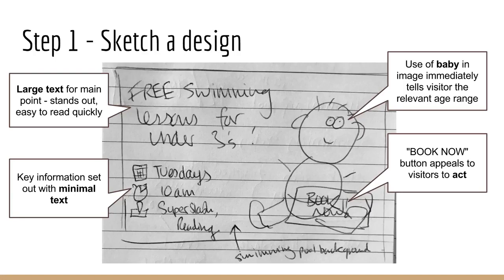Moving to the top right, you'll see we're using a baby or toddler in the image. That immediately tells the visitor the relevant age range — if you have a child that looks like the child in the image, you're going to be instantly attracted to it; if you don't, then this offer is not relevant to you. Faces, babies, anything looking at you will always grab your attention. We are hardwired psychologically to look at eyes when they're staring at us. So if you're targeting a particular age group, get people that look like that target audience, and you'll really easily communicate that this is something for them.